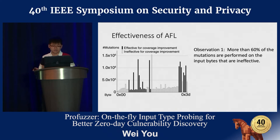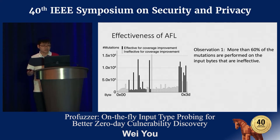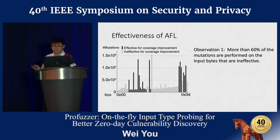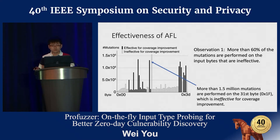Mutated inputs that increase code coverage are saved into the seed corpus for further mutation. Unfortunately, blindly random mutation is not that effective. We used AFL, the most popular mutation-based fuzzer, to fuzz OpenJPEG for 24 hours, and we observed that more than 60% of mutations are performed on the same input bytes. More than 1.5 million mutations are performed on the 31st byte, which is ineffective for coverage improvement.